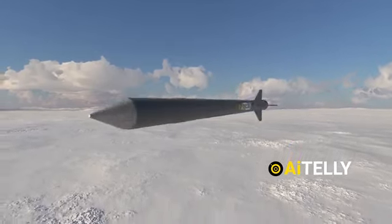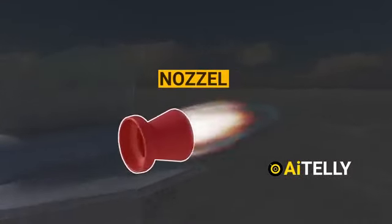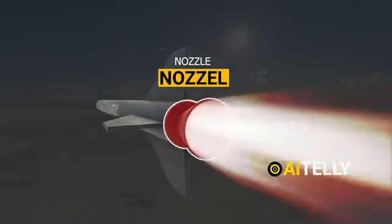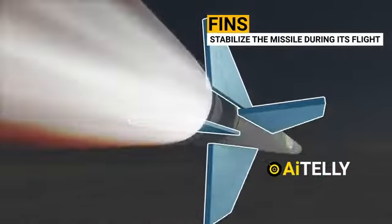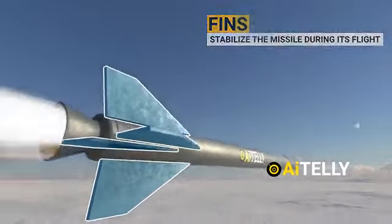At the rocket's rear, you'll find multiple nozzles responsible for expelling exhaust gases. Right above the nozzles, there are these fins whose primary purpose is to stabilize the rocket during its flight, ensuring it follows a precise parabolic trajectory.